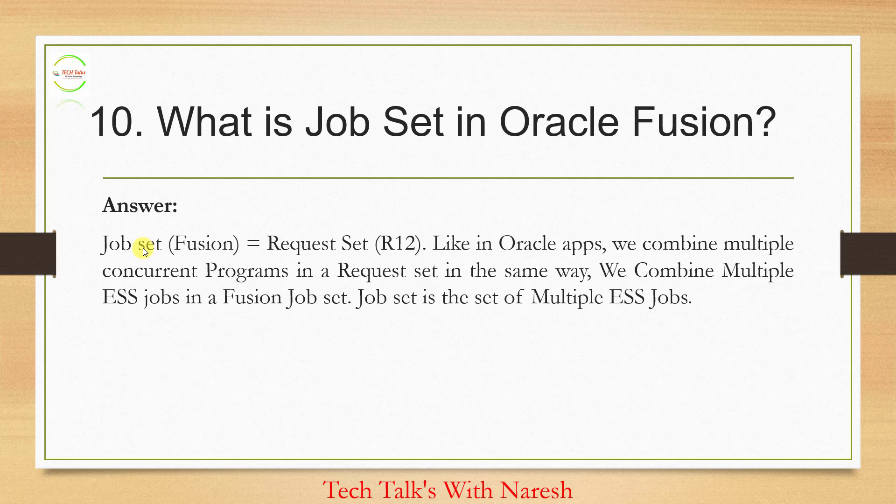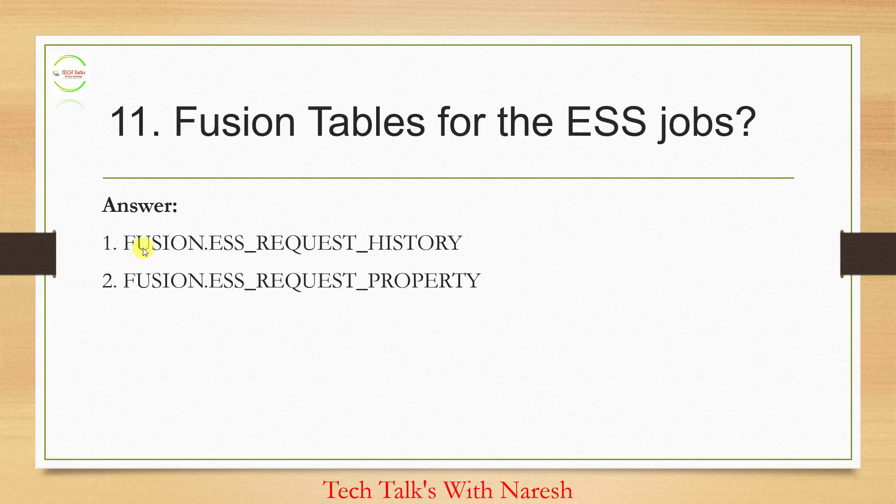There are also important ESS job tables. When you create and run an ESS job, the data goes into the table ESS_REQUEST_HISTORY — this stores the history of submitted jobs, whether completed, errored out, or in pending state. The second table is ESS_REQUEST_PROPERTIES — this stores all the respective details like parameters and other properties of the ESS job. If you need to check any detail about an ESS job, you query these two tables.